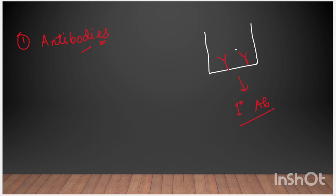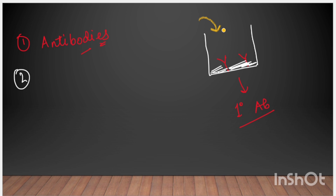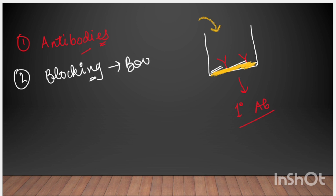Because the surface has the property that antibodies and antigens can bind to it, we need to block the remaining sites. In the second step, we will block it. Why do we block it? So that when we add antibodies from the sample, any unbound antibodies present in the sample will not attach non-specifically to the surface. We block it using bovine serum albumin solution.